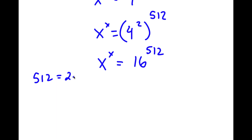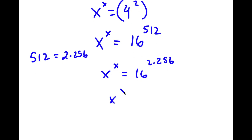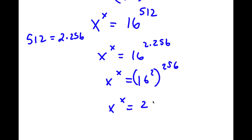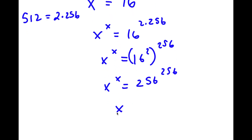I'm going to repeat the same thing again. 512 is equal to 2 times 256, so now I have x to the power of x is equal to 16 to the power of 2 times 256, which is the same thing as 16 squared to the power of 256, which is the same thing as 256 to the power of 256, meaning x is 256.